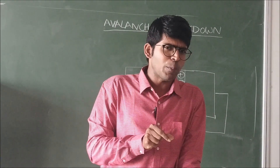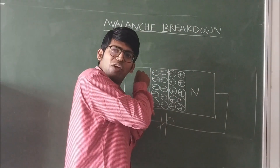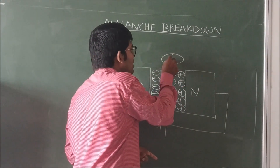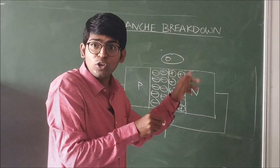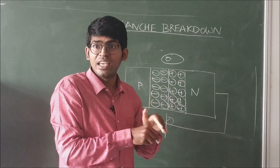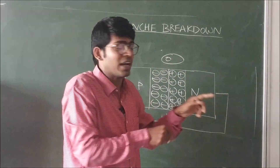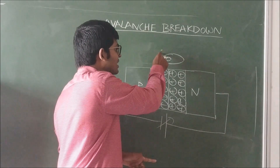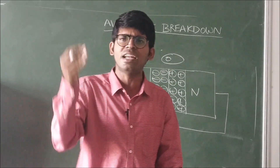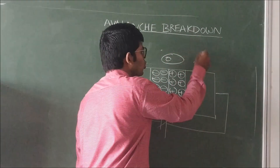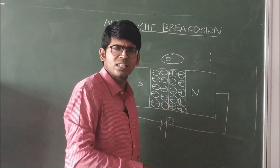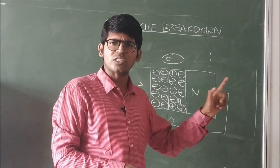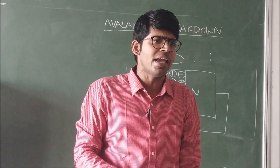Because of this higher-velocity electron hitting the electron in the covalent bond, that electron comes out leaving a hole. Every electron moving with higher velocity hits an electron in a covalent bond, causing it to come out. Because of the electric field, this new electron also accelerates and hits another electron in a covalent bond — this is a chain action. One electron hits and frees two electrons, and those two electrons each free more. The electrons are increasing, causing the current to increase tremendously. This process is called ionization by collision.